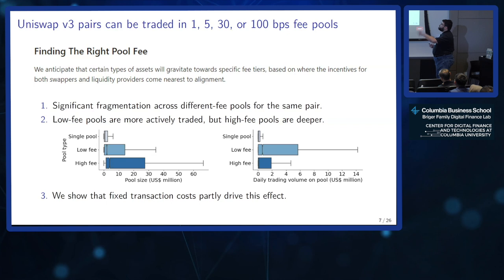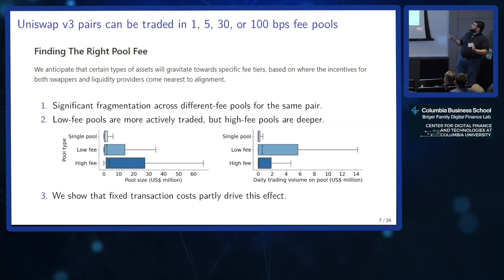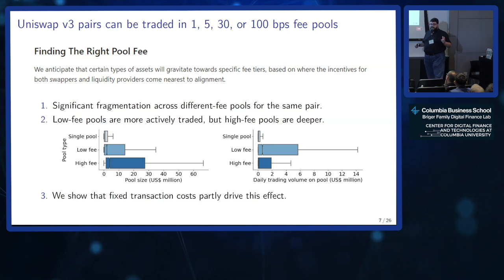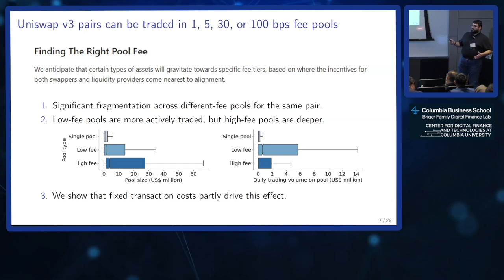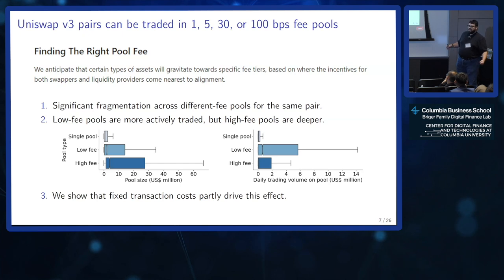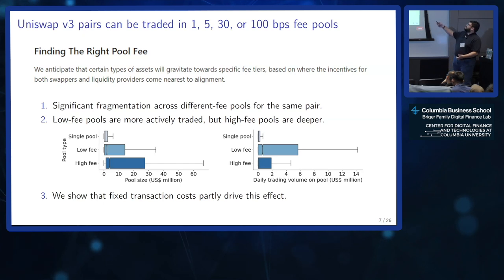When Uniswap moved to V3, they said every asset can be traded in one of four pools with a liquidity fee of 1, 5, 30, or 100 basis points. The thinking was that every pair would converge to one particular fee level: stablecoin-stablecoin pairs, having very little volatility or risk, would go to the 1 basis point pool; something trading between two unknown tokens with a lot of risk might go to 100 basis points. The idea was that trading would consolidate.